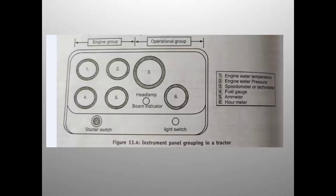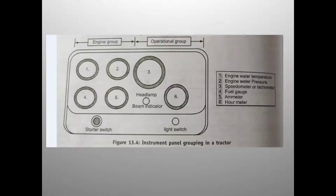Here is a diagram of the instrument panel showing: position one is engine water temperature on the left side; position four is fuel gauges; position two is engine water pressure; position three is speedometer or tachometer used to measure RPMs; position six is the hour meter; and the bottom section has the light switch and starter switch. These are grouped into two groups: engine group and operational group.